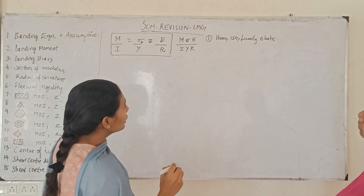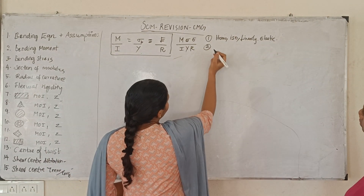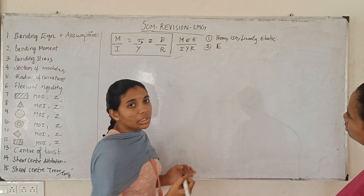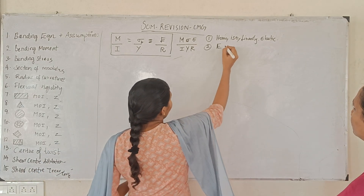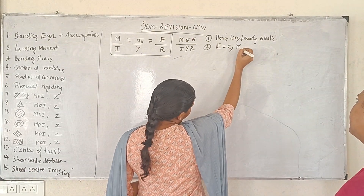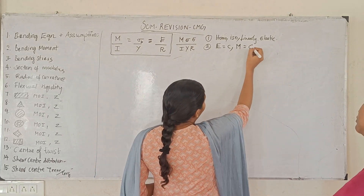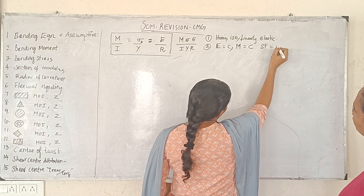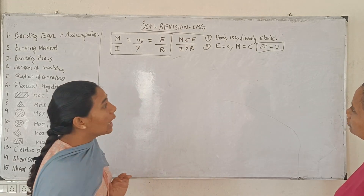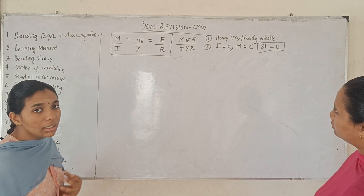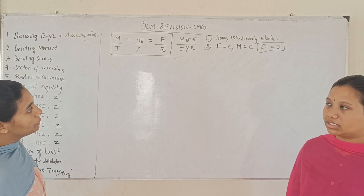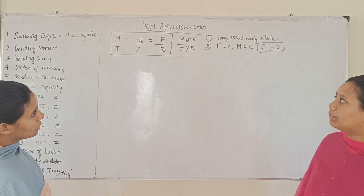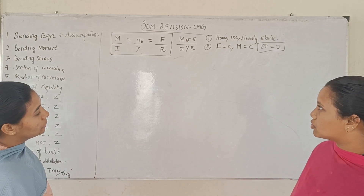We know that the bending moment is constant — that is pure bending. If the bending moment is constant, then we know that shear force is equal to zero. So the assumptions for the bending equation are: bending stress from the neutral axis equals M into y divided by I, radius of curvature.